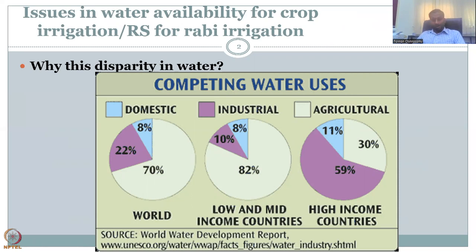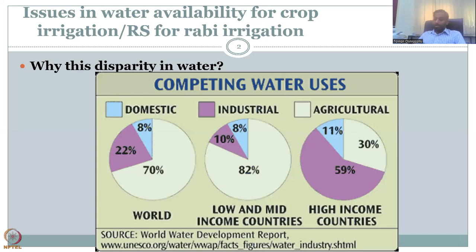There is always a disparity in water across the world. There is inequity — no equal distribution of water resources for livelihood options. For example, in the world, 70% of water is used for agriculture, 22% for industries, and 8% for domestic use, as per the UNESCO World Water Development Report.